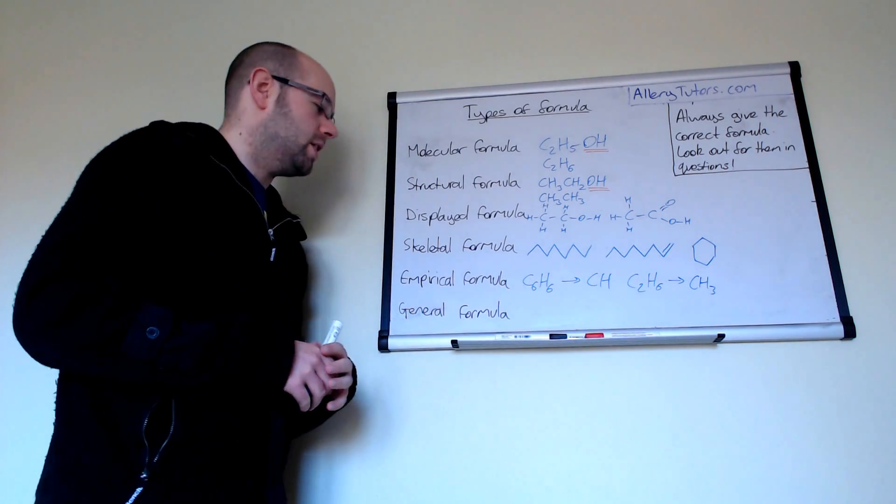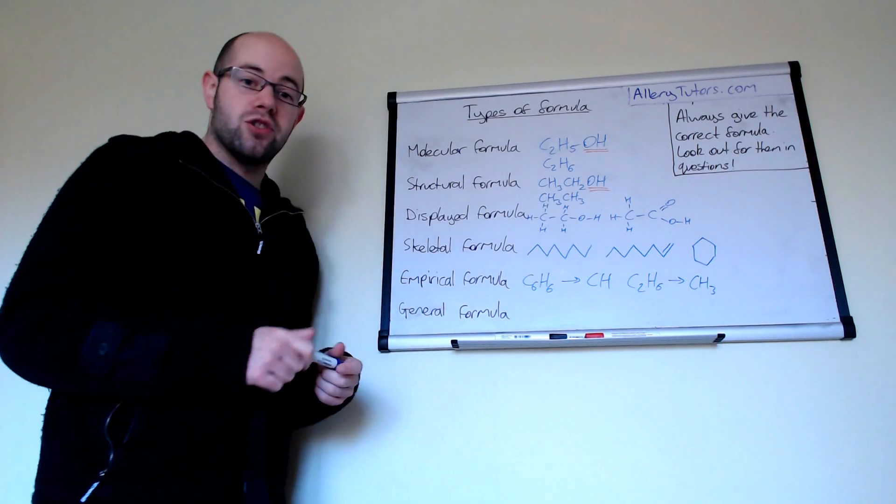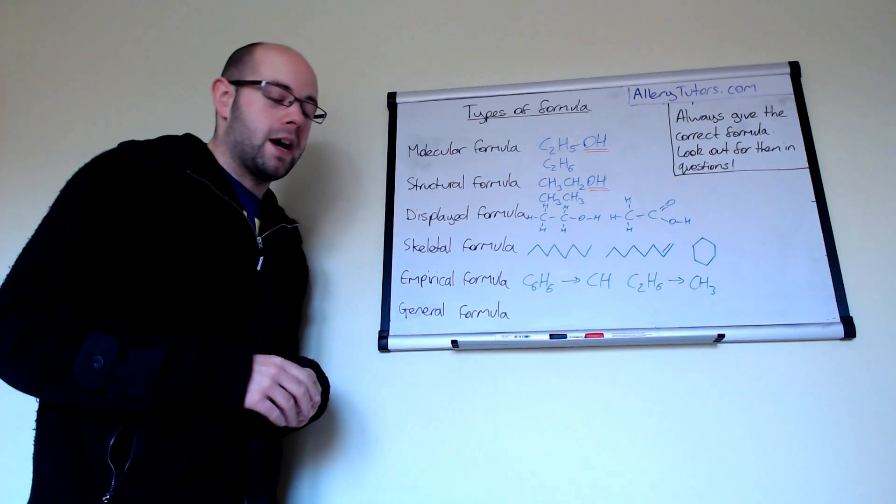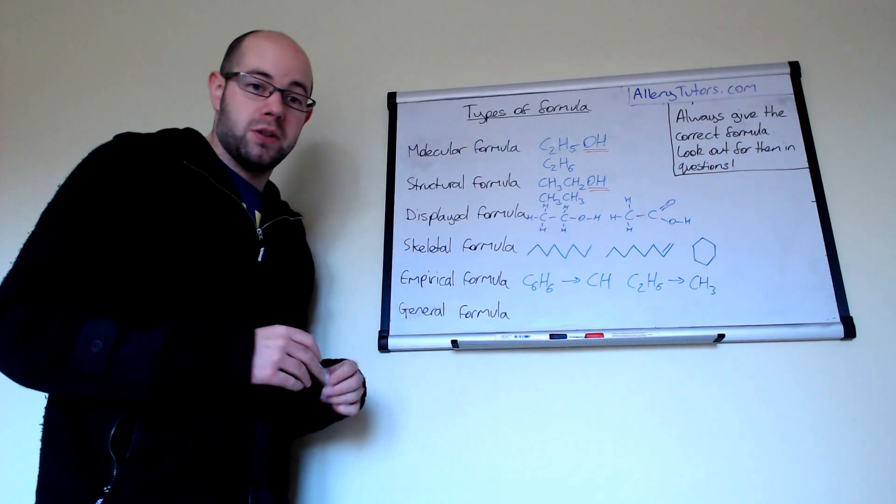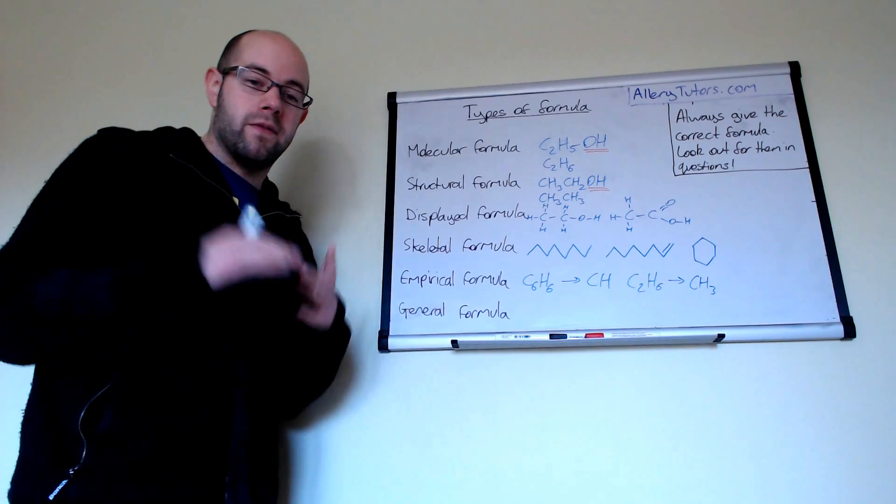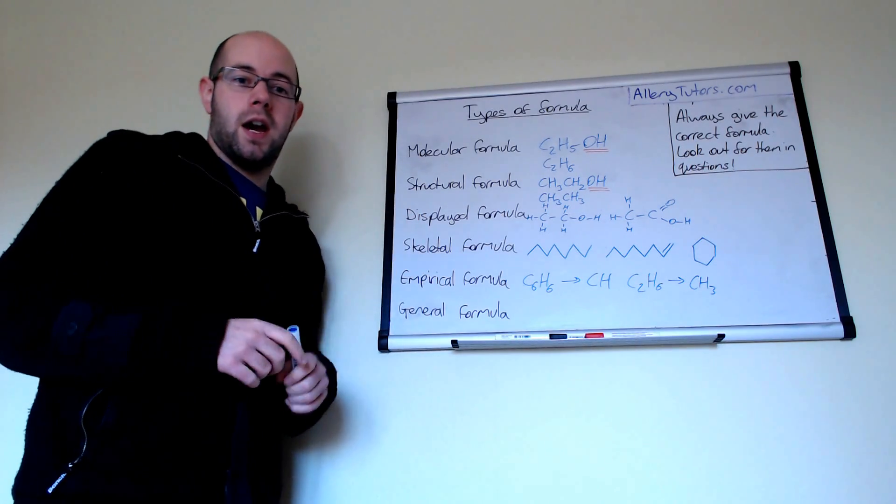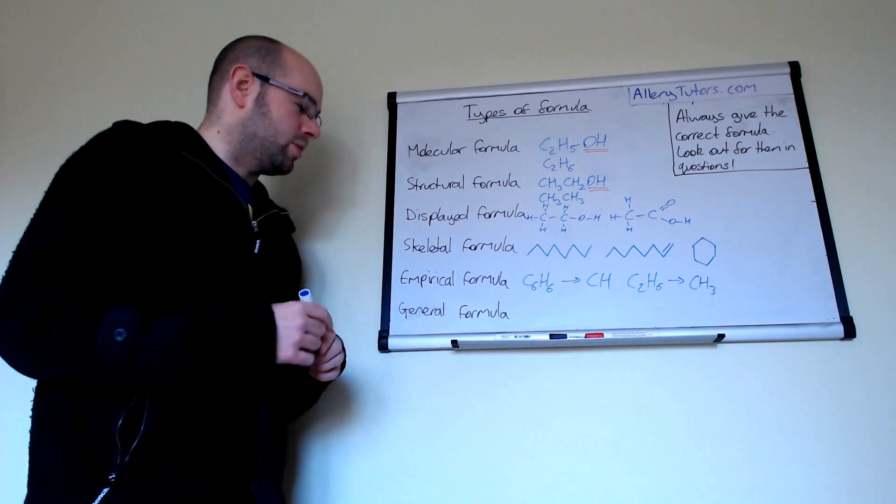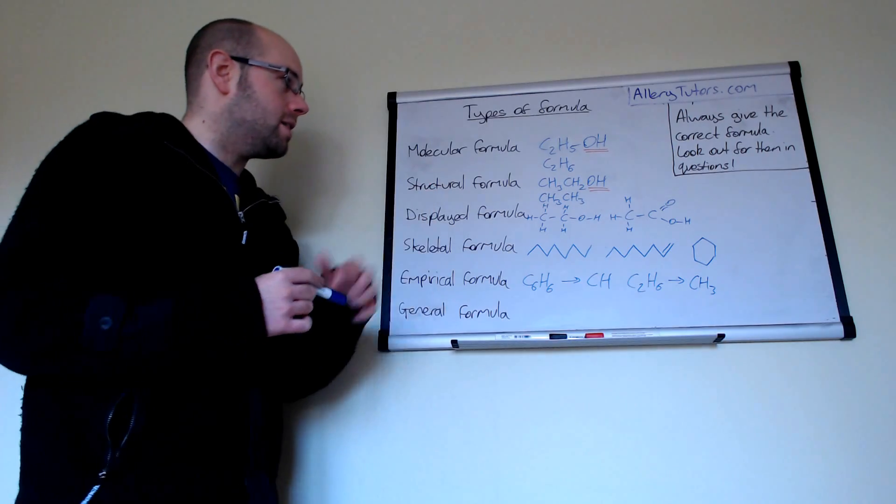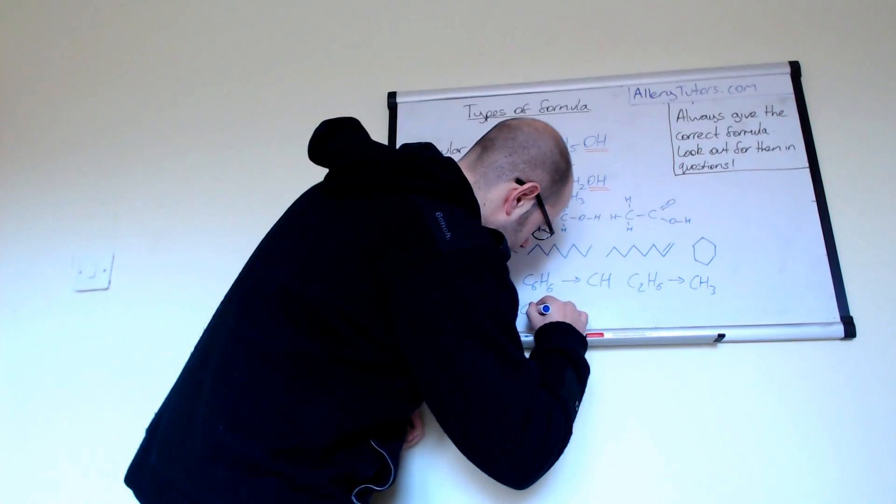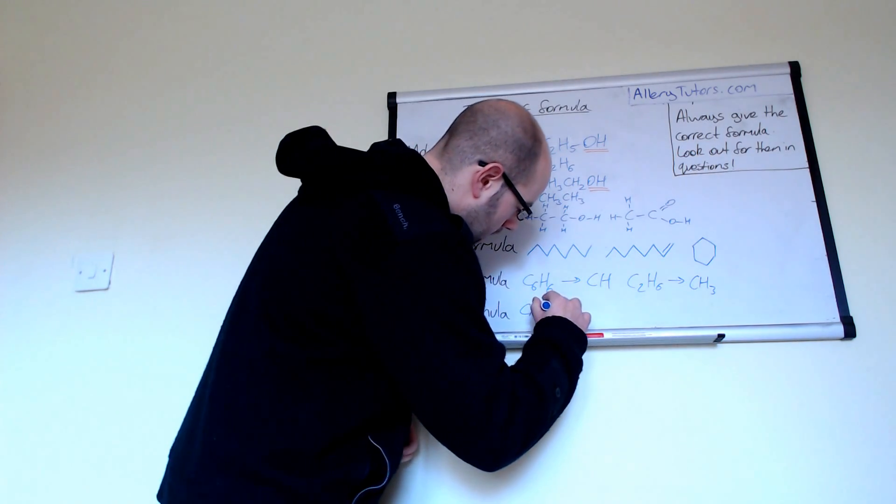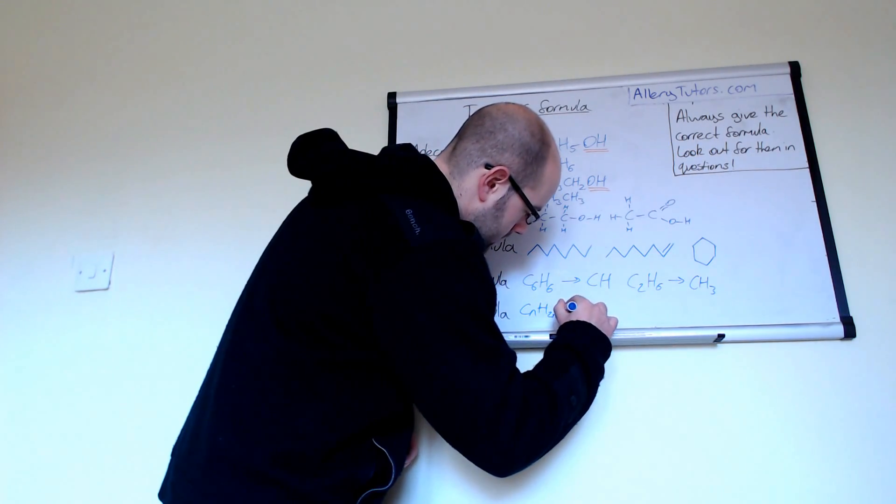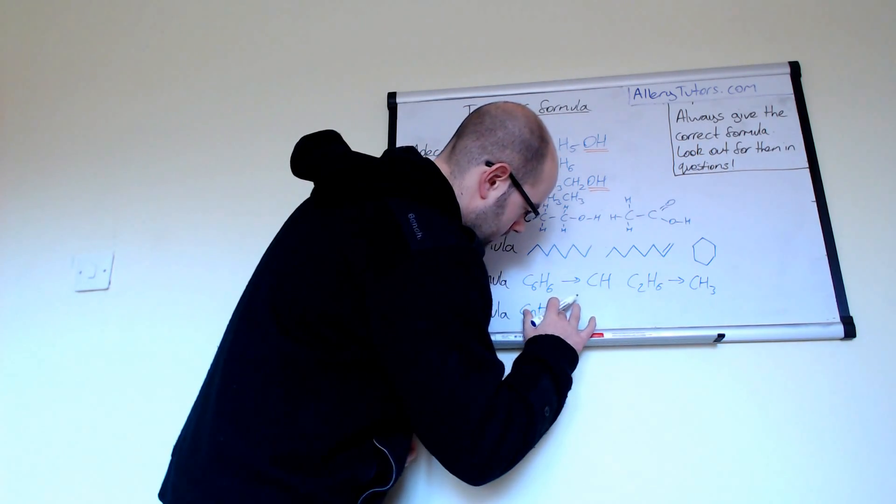The last one is the general formula. General formula is quite useful and it shows you particularly if you want to try and write down the formula of very very long hydrocarbons. For example the general formula for an alkane is CnH2n+2.